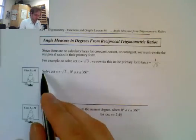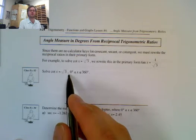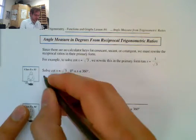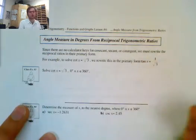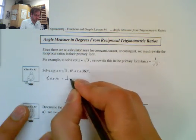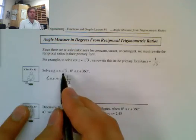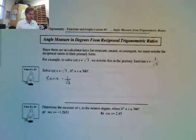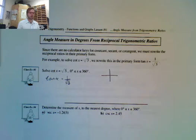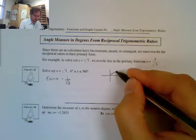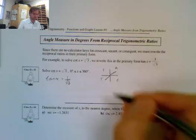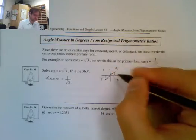Now let's look at cotangent of theta equals root 3, between 0 degrees and 360. I want to first convert this to tangent. Cotangent is the same thing as 1 over tan, the reciprocal. So we have tan x equals 1 over root 3, because tan x is the reciprocal of cotangent x. For tan being positive, we look at our CAST rule: tangent is positive in quadrant 1 and quadrant 3. Those are my two possible quadrants.